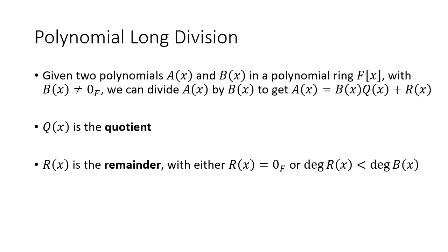Remember that this means that F is a field — a ring with multiplicative inverses for every element other than 0. Examples here could be Z sub p, the ring of real numbers, the field of rational numbers, etc. — lots of examples that we've seen in abstract algebra.